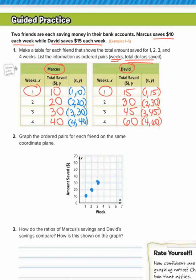And then lastly, we have 4 and 40. Look for where 4 and 40 meet. You start at 0, 4 to the right, and up 40. So this is Marcus's graph.